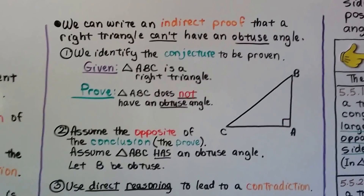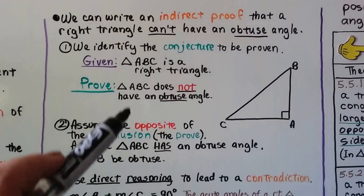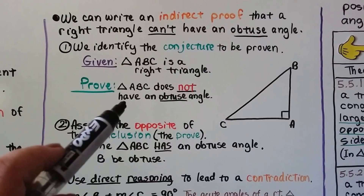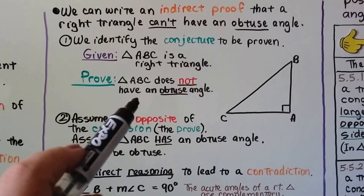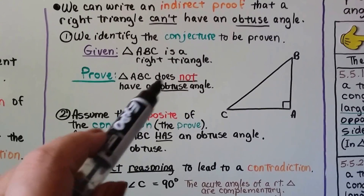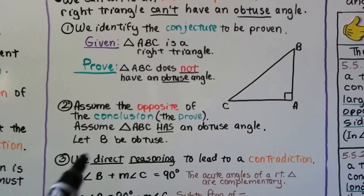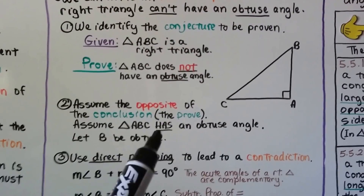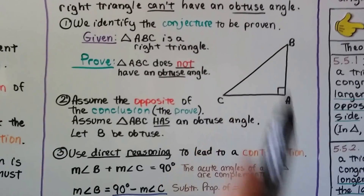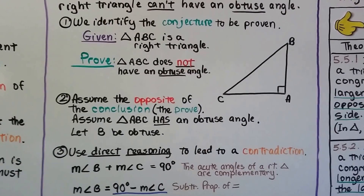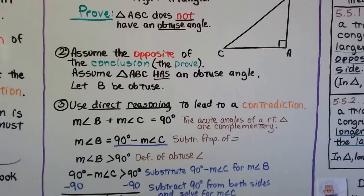Number two, we assume the opposite of the conclusion — the prove statement. So if it says to prove that it does not have an obtuse angle, we're going to do the opposite. We're going to assume triangle ABC has an obtuse angle, and we're going to let angle B be obtuse. We're just going to assume it's obtuse.